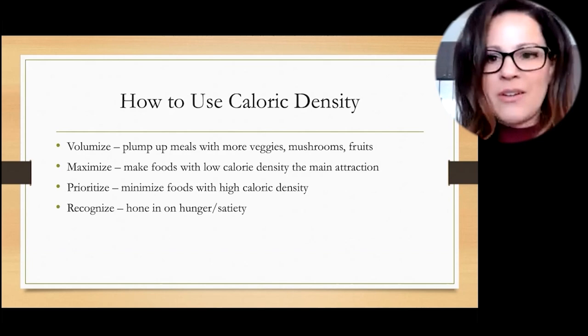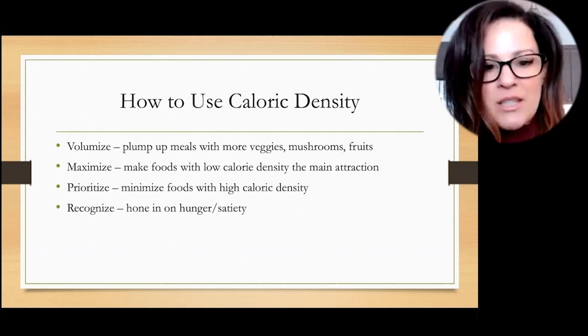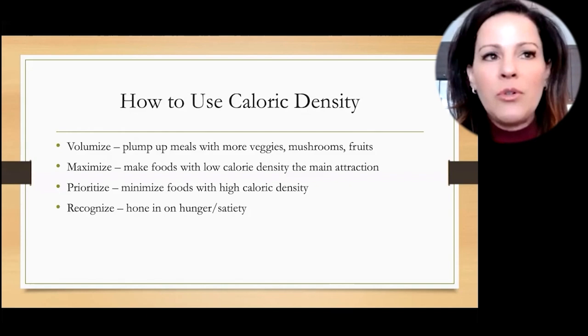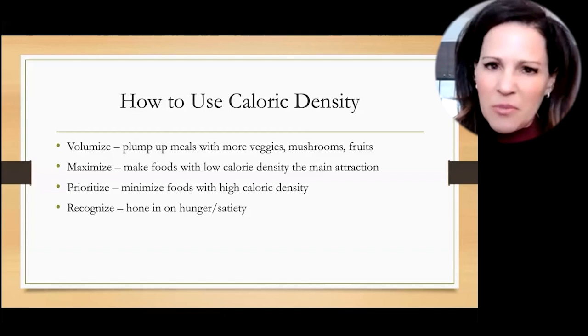The other step is maximizing. So you're making the foods with the low calorie density the main attraction. So in the book, stuff like my spaghetti squash lasagna or the peanut butter vegetable curry, or the Tex-Mex stuffed peppers with cheesy sauce, making those vegetable heavy dishes and mushroom heavy dishes the main attraction. And then you're just getting lower calorie. Cause again, we have to create a deficit.